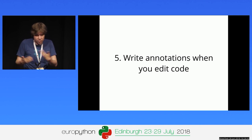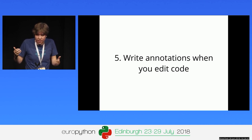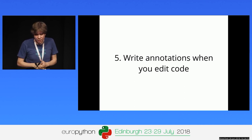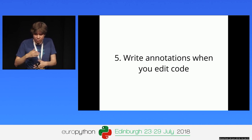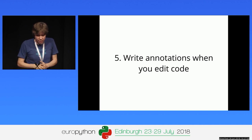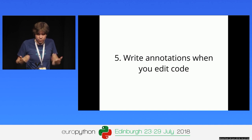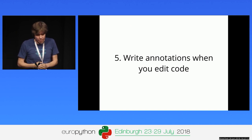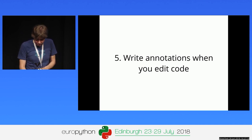Establish team guidelines: if you edit a file, add annotations to the modified functions; if you write new functions, annotate them. This way you'll gradually get more and more annotations. When you're writing code you already understand what it does, so writing annotations should be straightforward — you'd write a docstring anyway, and annotations are more compact, so you actually save time while gaining type checking coverage.